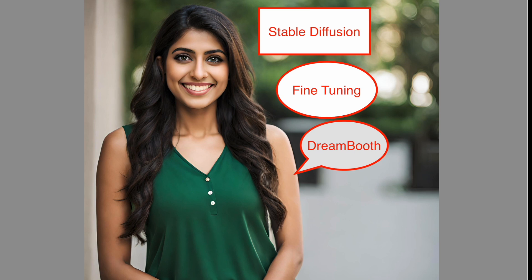In today's video, we will look at Dreambooth fine-tuning for stable diffusion using Diffusers. This notebook shows how to teach stable diffusion a new concept via Dreambooth using the HuggingFace Diffusers library. By using just three to five images, we can teach new concepts to stable diffusion and personalize the model on your own images. This work incorporates insights and code snippets courtesy of HuggingFace and the authors of the Dreambooth research paper. We extend our gratitude to the original authors and HuggingFace.